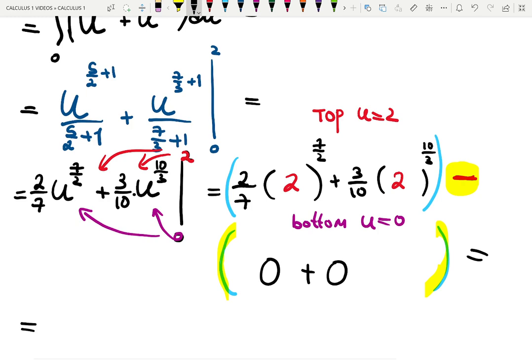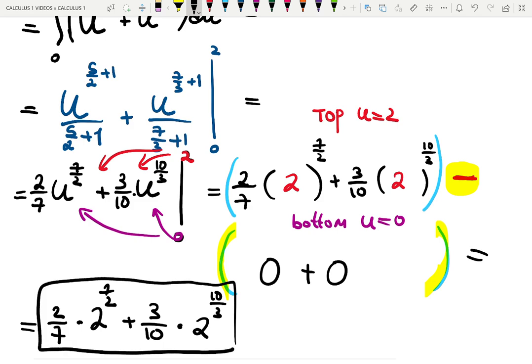Now I can just finish. The answer will be 2 over 7 times 2. Well, actually, we could collect 2 and 2 raised to the 7 over 2. Plus, 3 over 10 times 2. 10 over 3. We also could simplify because 10 and 5 times 2, blah, blah, blah. But do we really want to do that? If you do, go ahead and simplify some exponents.